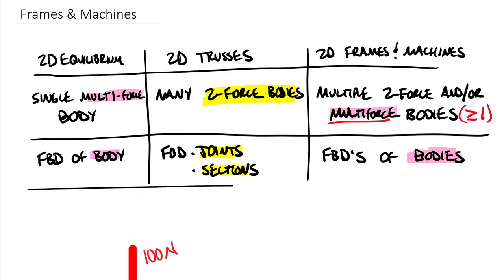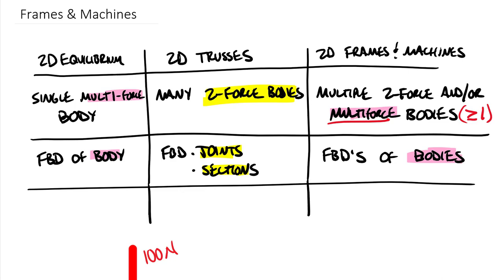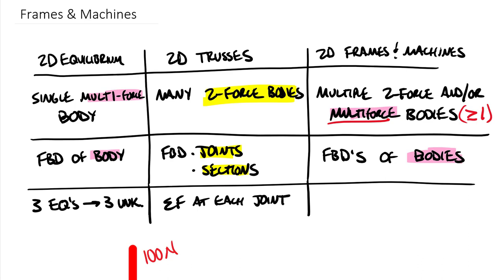For the equations and unknowns row: for a single body we had three equations to solve for three unknowns. For 2D trusses using method of joints we summed forces at each joint. For frames and machines, because they act more like single multi-force bodies, we have three times the number of free body diagrams as our number of equations, and therefore we can solve for three times the number of FBDs worth of unknowns.